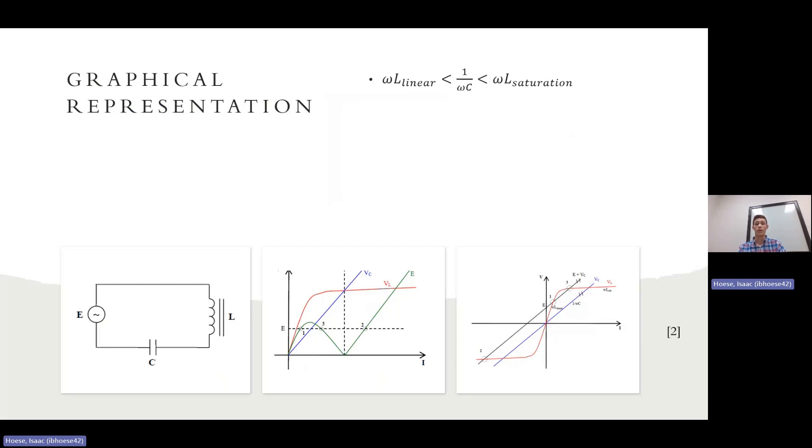Point two is when the capacitor voltage is greater than the inductor voltage. This is also considered stable because it's away from the knee region, but it's a stable ferroresonance state. So it is under ferroresonance, but if it's in this state only, then it is considered stable. And point three is when the inductive and capacitive reactances are equal, thus creating a very, very low impedance circuit. This is where our over voltages and overcurrents are going to occur.